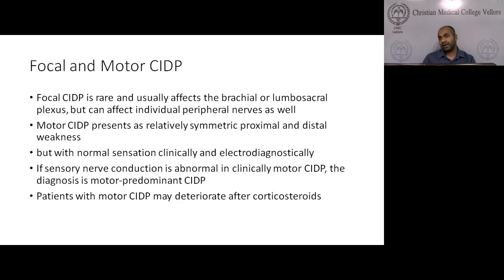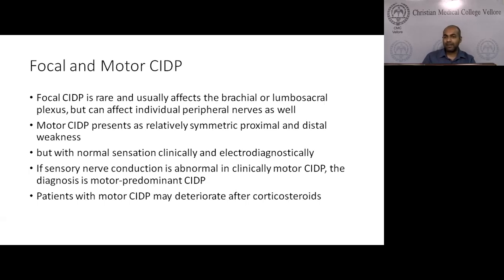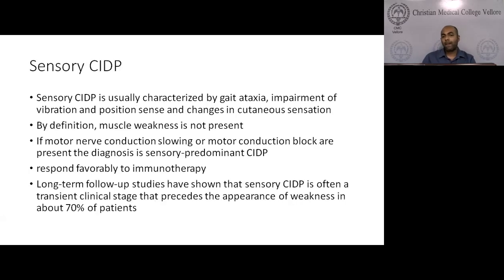Focal CIDP is rare, usually affecting the brachial or lumbosacral plexus but can involve peripheral nerves. Motor CIDP presents as symmetric pure motor manifestations — symmetric proximal and distal weakness with normal sensation clinically; if sensory nerve conduction is abnormal, the diagnosis becomes motor predominant. Motor CIDP patients are sensitive to steroids and can even worsen with corticosteroids. Sensory CIDP presents with gait ataxia, sensory symptoms, impaired joint position and vibration sense, with no weakness by definition; if motor abnormalities are present, it is known as sensory predominant CIDP. Both respond favorably to immunotherapy.